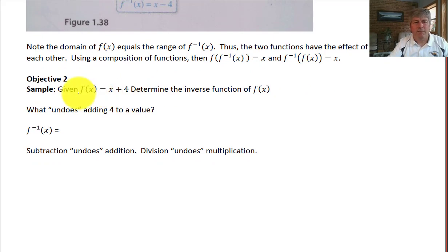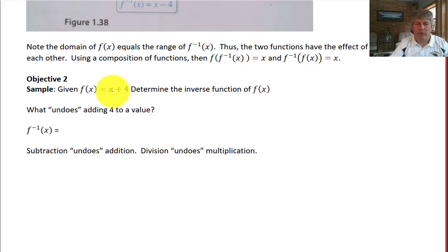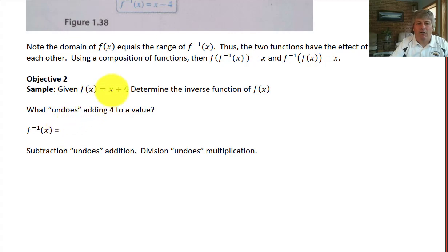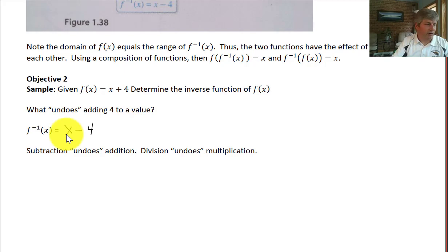For our second objective, given f(x) = x + 4, determine the inverse function. Ask yourself: what undoes adding 4 to a value? We want to undo that — instead of adding a value, we subtract. Subtraction undoes addition and division undoes multiplication. So the inverse of x + 4 is x − 4.